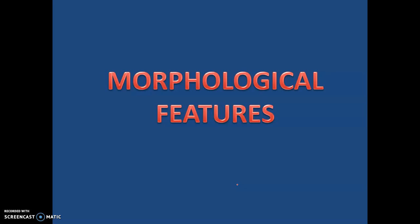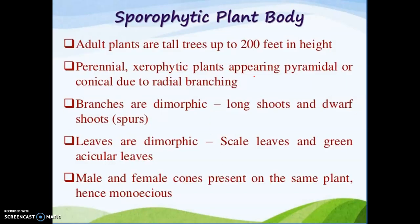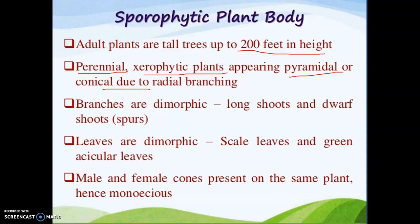Now we come to the morphological features of Pinus. First is the plant body. The main plant body is sporophytic because the gametophytic phase is highly reduced in gymnosperms. Adult plants are tall trees up to 200 feet in height, perennial xerophytic plants. They appear pyramidal or conical in shape because of radial branching. Branches are dimorphic, consisting of two types: long shoots and dwarf shoots.